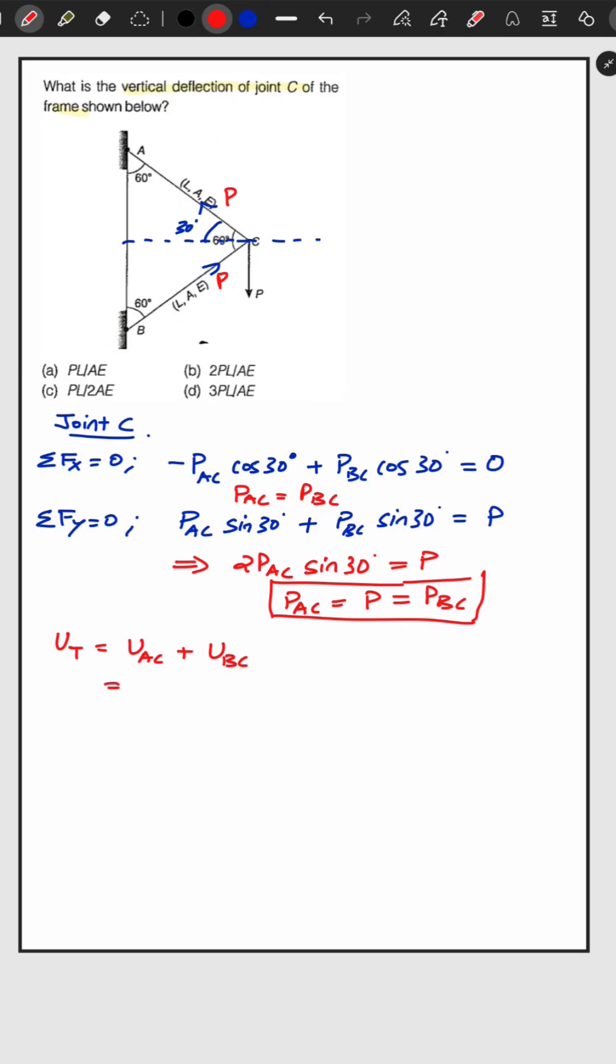So here it will be UAC will be P squared L by 2AE and UBC will be P squared L by 2AE. This is UT. Now it will be P squared L by AE.